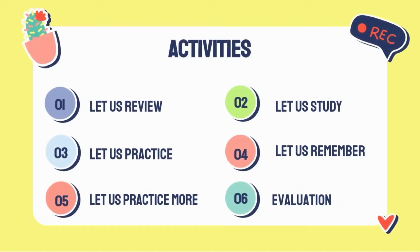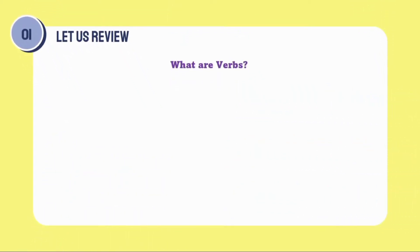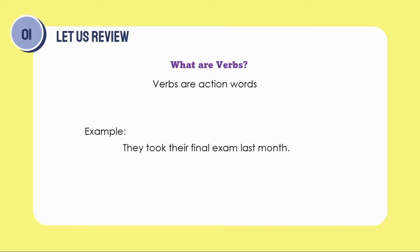Let us have first a review about verbs. What are verbs? Verbs are action words and they form part of the predicate of the sentence. For example, we have this sentence: They took their final exam last month. The subject is 'they' and the predicate is 'took their final exam last month.' The verb is 'took.'